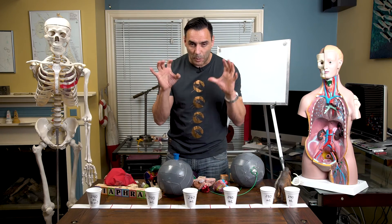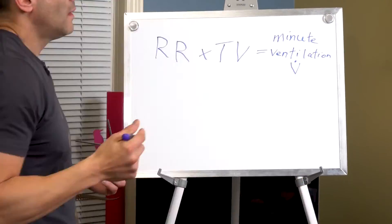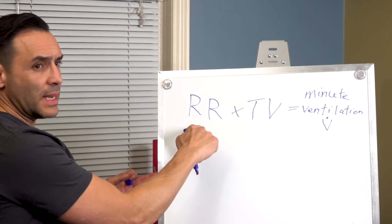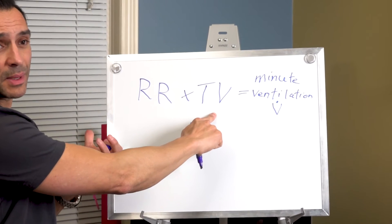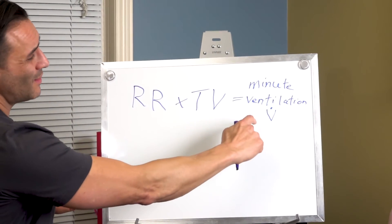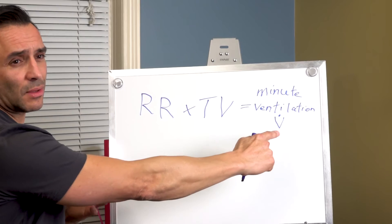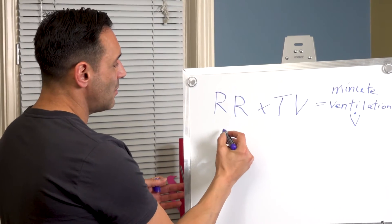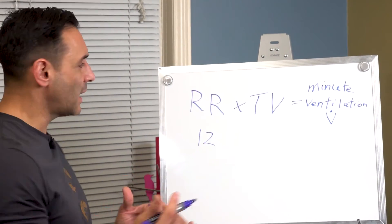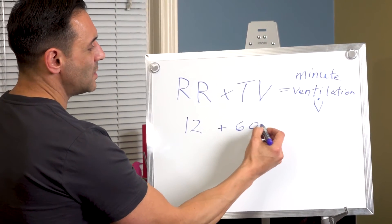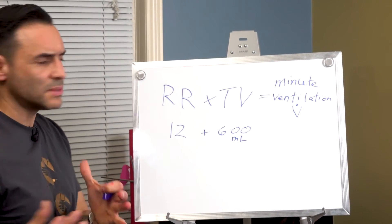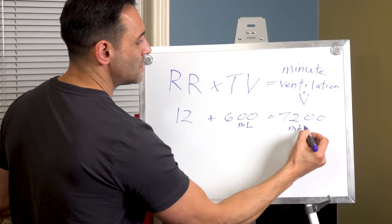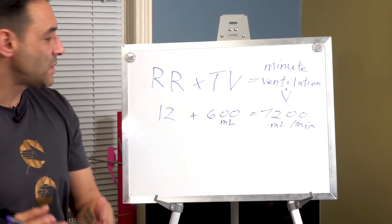Let's do the math. The formula for minute ventilation is: respiratory rate (how many times per minute) times tidal volume (how much you breathe in with every breath) equals minute ventilation — a capital V with a dot over top. In the normal circumstance for me: 12 times a minute, every five seconds, times 600 milliliters — which is 20 ounces, like a large coffee — equals 7200 milliliters per minute.